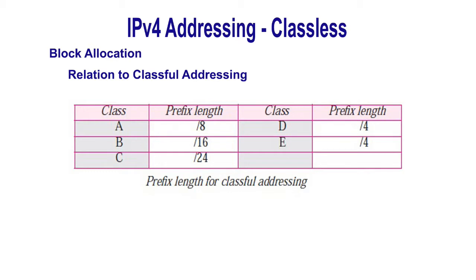Relation to classful addressing: All issues discussed for classless addressing can be applied to classful addressing. As a matter of fact, classful addressing is a special case of classless addressing in which the blocks in class A, B, and C have prefix lengths nA equals 8, nB equals 16, and nC equals 24. A block in classful addressing can be easily expressed as a classless block using the corresponding prefix length.